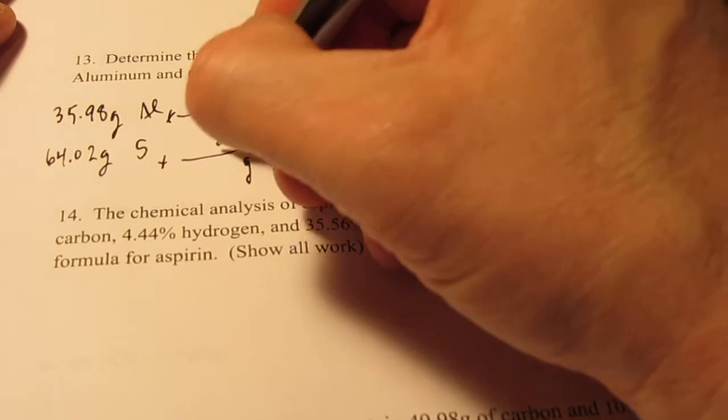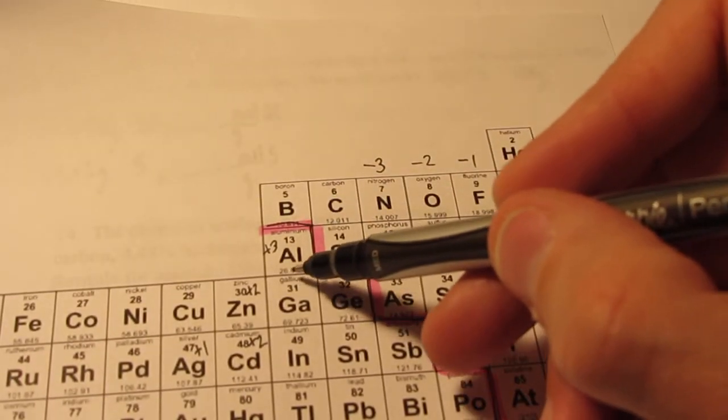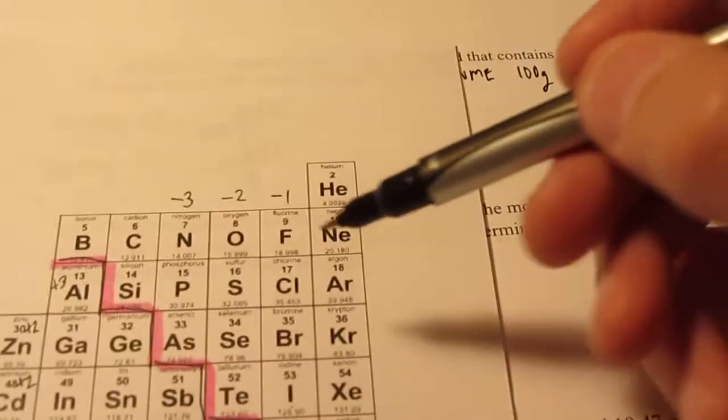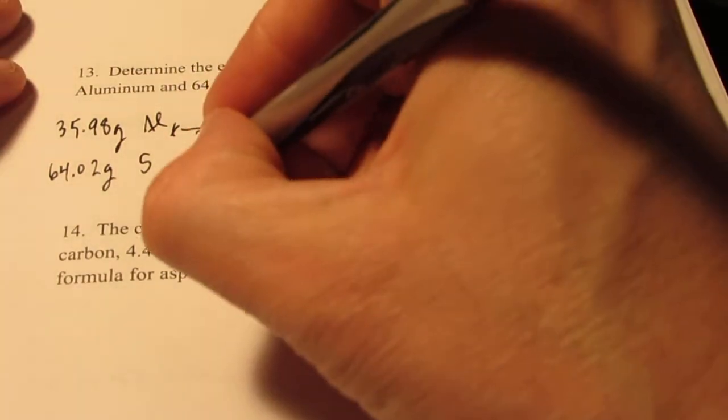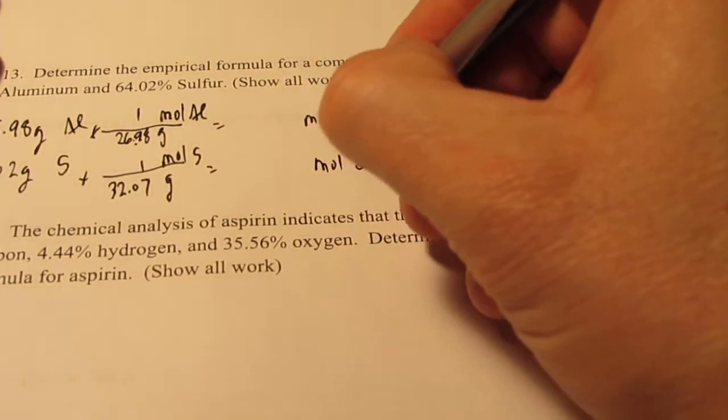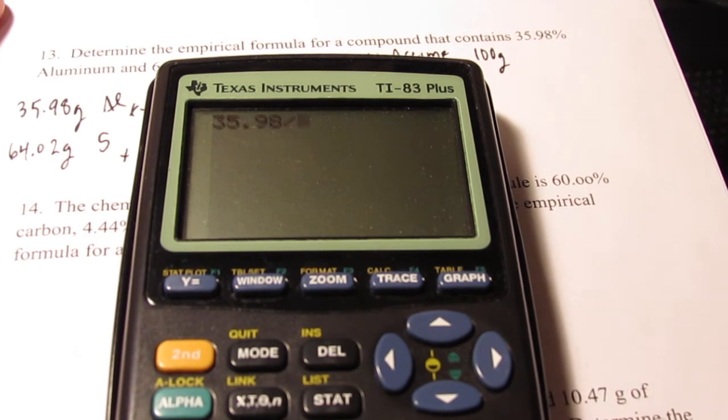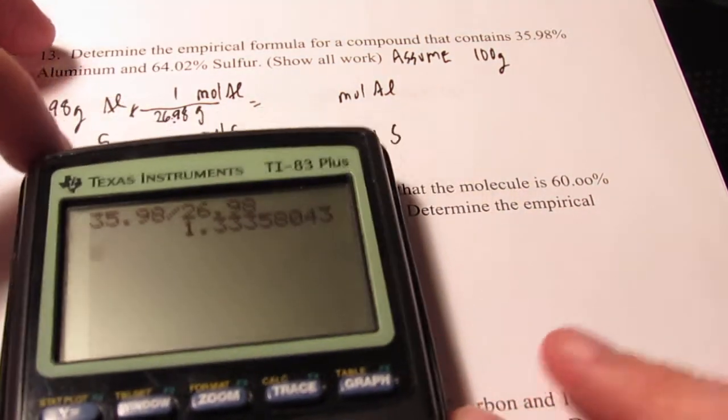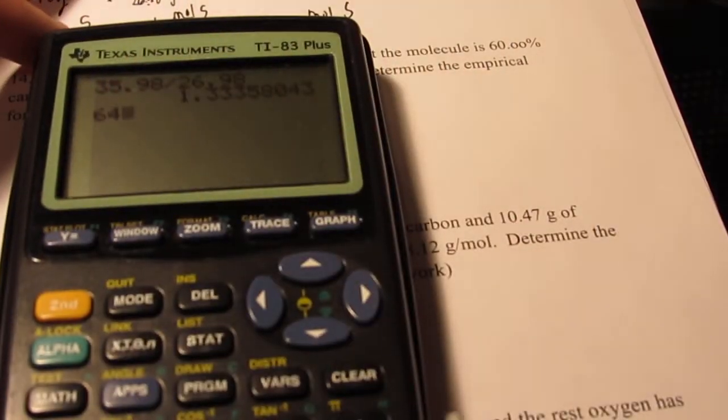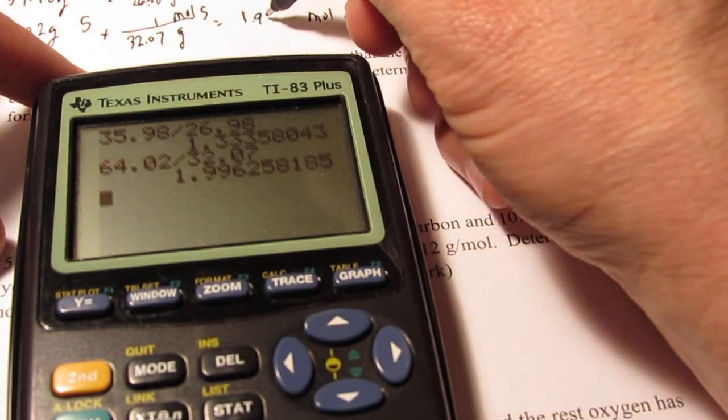Put grams on the bottom, moles on top. We'll put a one by mole for each. And of course to find grams we need to use our periodic table. So aluminum has an atomic weight of 26.98 grams. And sulfur, to the nearest hundredth, 32.07 grams per mole. Okay, so this will help us find moles of aluminum and moles of sulfur. So let's plug those in. We have 35.98 divided by 26.98, which was the atomic mass of aluminum. That gives me 1.334 moles of aluminum. And for sulfur, 64.02 divided by 32.07 grams per mole gives me 1.996 moles of sulfur.